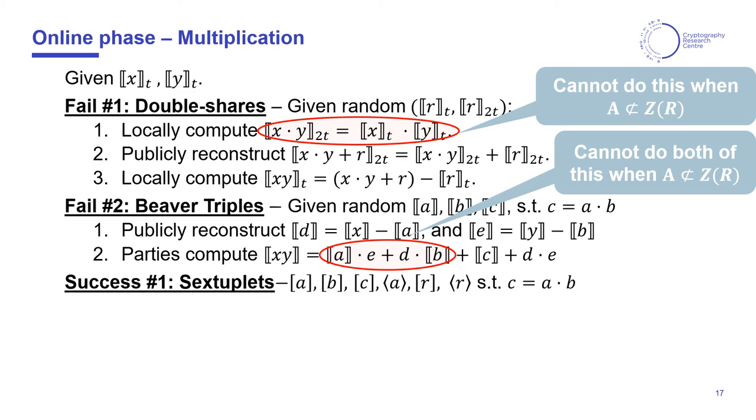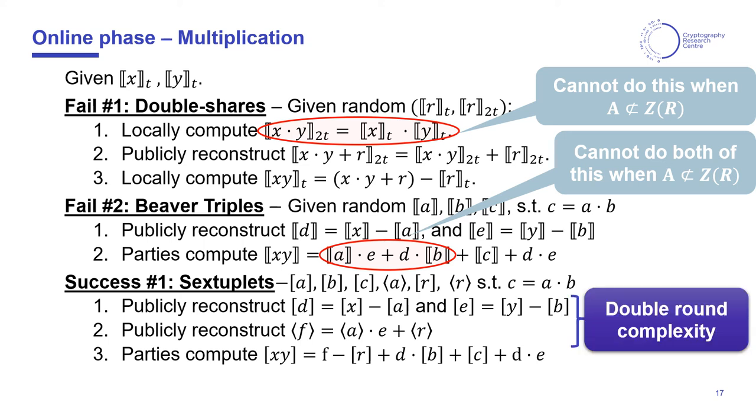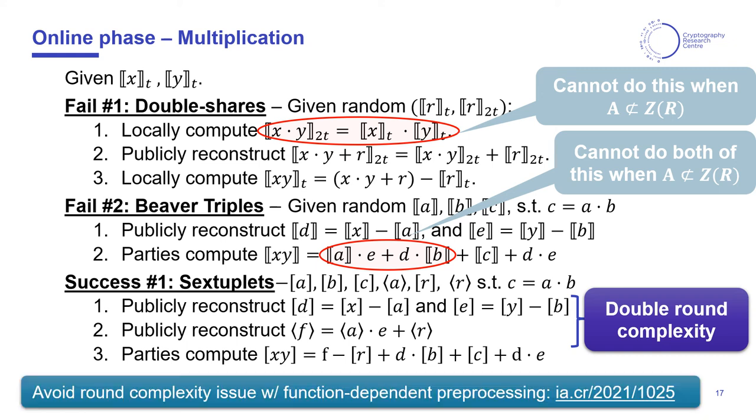Finally, the first working solution in this challenging setting will be to enhance beaver triples with additional correlated randomness. The first step looks as in the classic procedure, but in order to overcome the lack of a bimodule structure, we will need an intermediate step, as shown on the slide. The issue with this approach is that it doubles the round complexity of the online phase. Nevertheless, in the paper we show how to go back to the usual round complexity by employing some function-dependent preprocessing, so I invite you to check that out on ePrint.